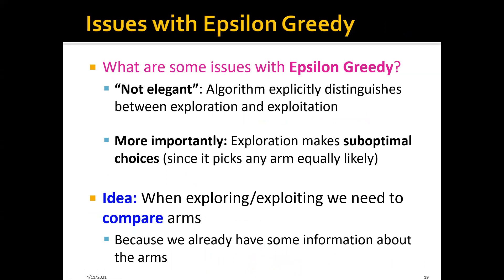However, there are some issues with the epsilon-greedy algorithm. The first is that it's not very elegant, because it explicitly distinguishes between exploration and exploitation — with probability epsilon to explore and probability 1 minus epsilon to exploit. More importantly, this sort of exploration makes suboptimal choices, because it picks any arm equally likely. Our new idea to improve upon epsilon-greedy is that when exploring or exploiting, we need to compare arms, since as time goes on we already have more information about them. Picking any arm equally likely is obviously not the optimal choice.